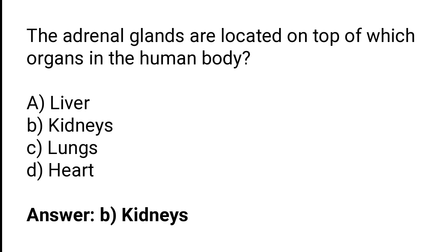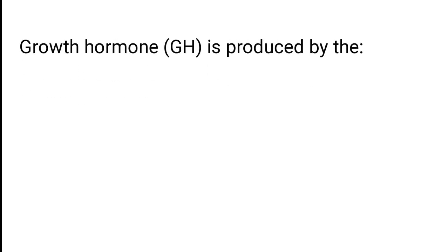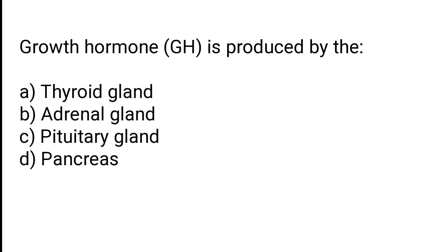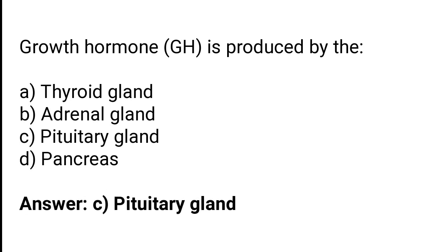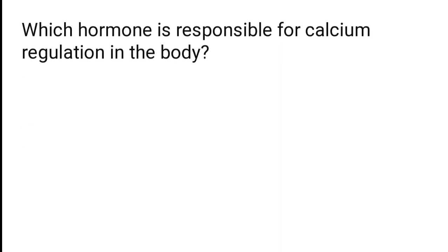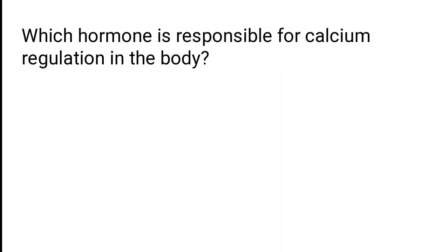Growth hormone is produced by which gland? Thyroid gland, adrenal gland, pituitary gland, pancreas. The correct answer is option C: growth hormone is produced by the pituitary gland.